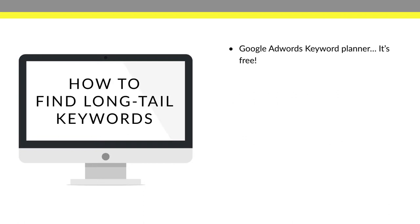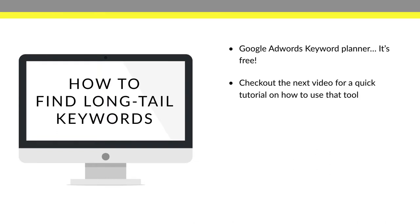To find long tail keywords, the Google AdWords Keyword Planner is where you want to go — and it's totally free. You do have to set up an advertising campaign, but you can just pause it and never run it. Once you have a Google account, set up your first advertising campaign, enter your credit card, but you don't ever have to use it — that's what makes it free. Check out the next video for a quick tutorial on how to use the keyword tool.